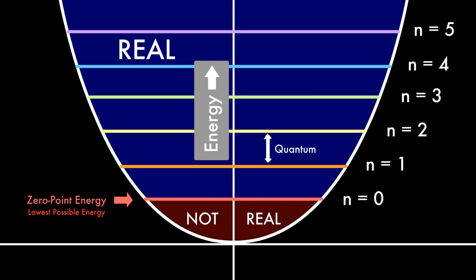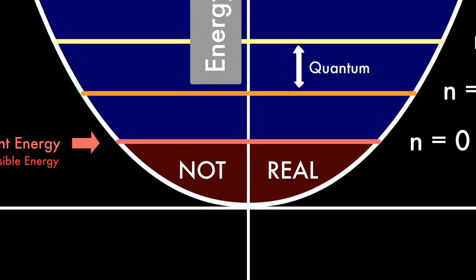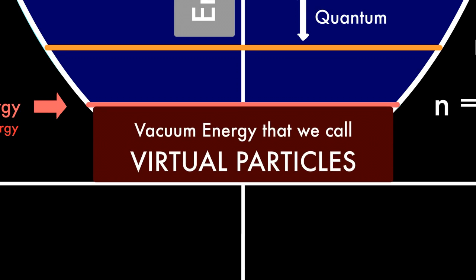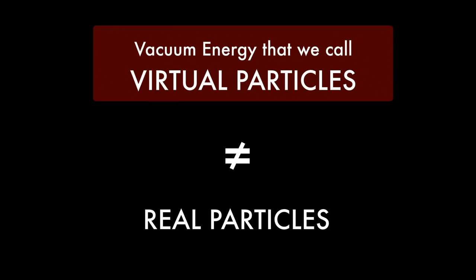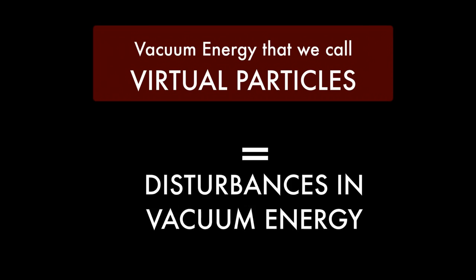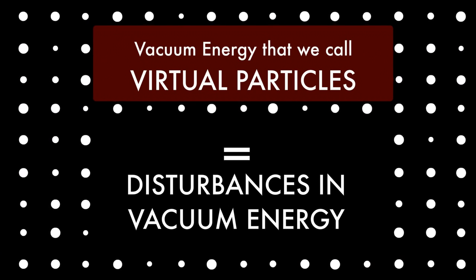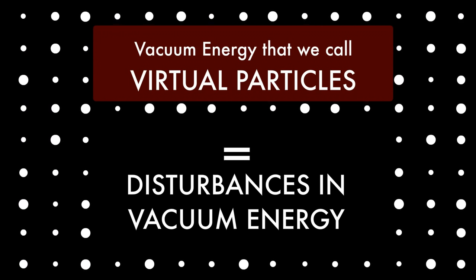No real particles can exist below the zero point. The energy lower than the zero point energy is so low that it cannot exist in real particles. Everything in this area below the zero point is actually just disturbance in the vacuum energy that can push the vacuum energy described earlier over the zero point energy.